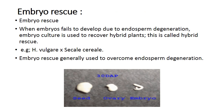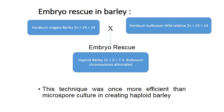Embryo rescue: when embryos fail to develop due to endosperm degeneration, embryo culture is used to recover hybrid plants — this is called hybrid rescue. Example: Hordeum vulgare × Hordeum bulbosum cross. Hordeum vulgare (barley, 2n=14) is crossed with Hordeum bulbosum (a wild relative, 2n=14); chromosomal elimination of Hordeum bulbosum chromosomes takes place. Embryo rescue is done to save the F1 progeny and obtain the haploid F1. This technique was once more efficient than microspore culture in creating haploid barley.